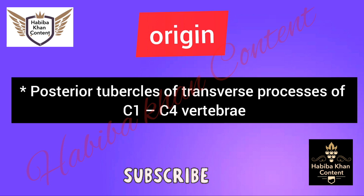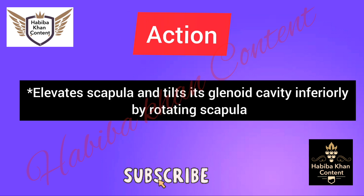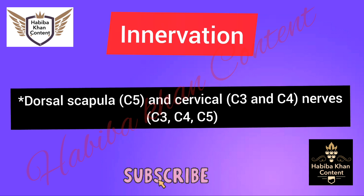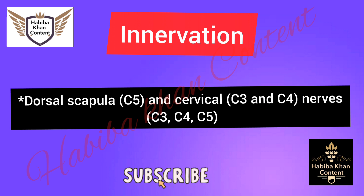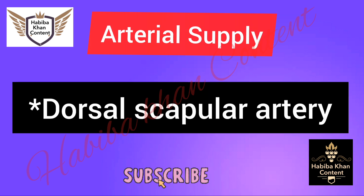Levator scapulae muscle. Origin: posterior tubercles of transverse processes of C1 to C4 vertebrae. Insertion: superior part of medial border of scapula. Action: elevates scapula and tilts its glenoid cavity inferiorly by rotating scapula. Innervation: dorsal scapular nerve C5 and cervical nerves C3 and C4. Arterial supply: dorsal scapular artery.